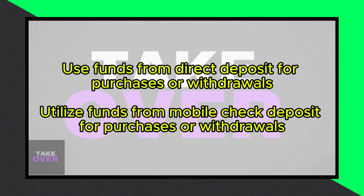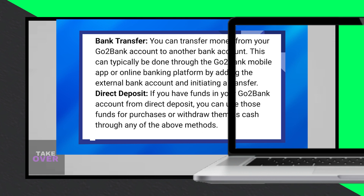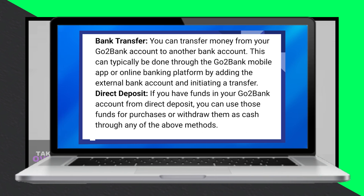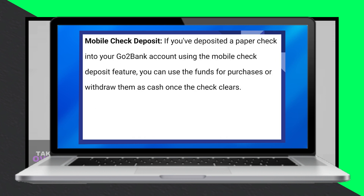If you have funds in your GoToBank account from direct deposit, you can use those funds for purchases or withdraw them as cash through any of the mentioned methods. If you've deposited a paper check into your GoToBank account using the mobile check deposit feature, you can use the funds for purchases or withdraw them as cash once the check clears.